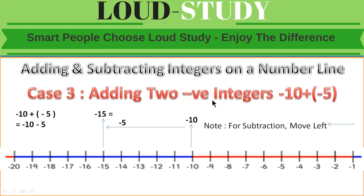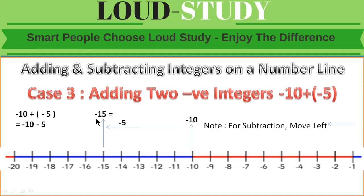Case 3: adding two negative integers. Suppose minus 10 plus minus 5. Applying the rule, plus multiplied by minus gives minus, so this becomes minus 10 minus 5. Starting at minus 10, for subtraction we move left 5 steps: 1, 2, 3, 4, 5. Our answer is minus 15.